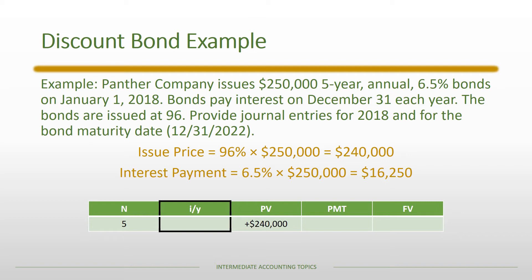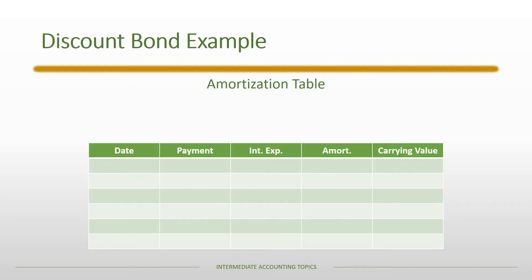The present value is the issue price of $240,000. The contractual interest payments are $16,250, and at maturity the par value of $250,000 is the principal repaid. Solving for the yield gives us 7.4884%. As expected from the first lecture on long-term liabilities, because this was issued at a discount, the market rate or bond yield must exceed the contractual rate — 6.5% contractual versus 7.4884% yield.